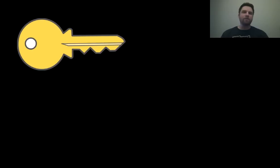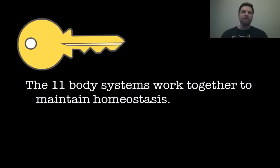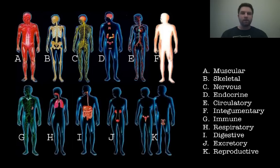So now we have our second key concept: the eleven body systems work together to maintain homeostasis. We're going to go through these eleven body systems pretty quickly to cover the main organs and functions of each of them. Here are the eleven of them, A through K listed here — muscular, skeletal, nervous — and we're going to go through each one in a little bit of detail.